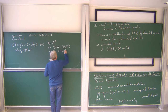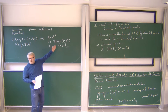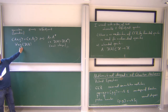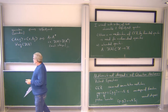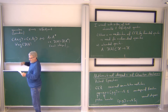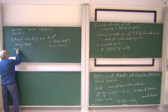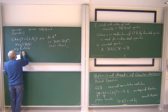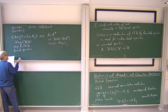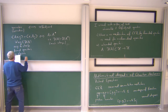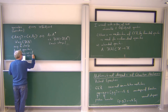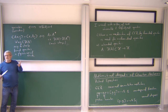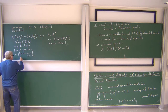Self-adjoint is much stronger than symmetric, which means it is not so easy to check. Operators which you write down in physics, formally, are always symmetric — that's easy to check and is usually satisfied in a formal way. But mathematically, symmetry is not strong enough to give you any nice, interesting statements about those operators. What you really want is self-adjoint, because then you have strong theorems.